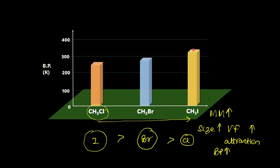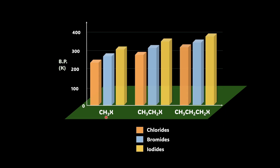Taking it all together for methyl halides: methyl chloride, methyl bromide, and methyl iodide — methyl iodide has the highest boiling point. The same applies to ethyl halides and propyl halides. If we fix the halogen to chloride, then methyl chloride, ethyl chloride, and propyl chloride show increasing boiling points as the molar mass increases.